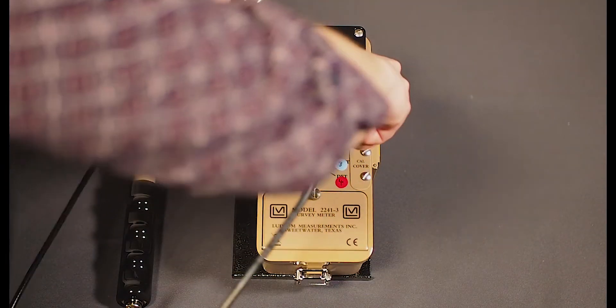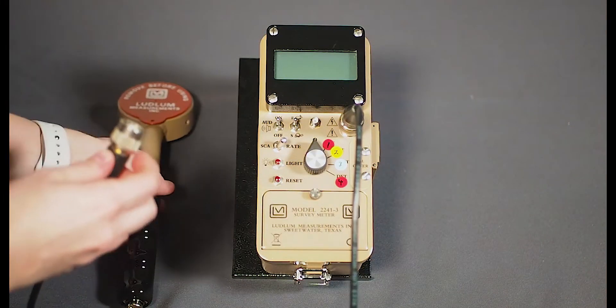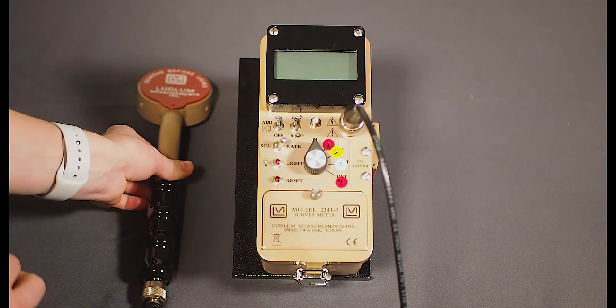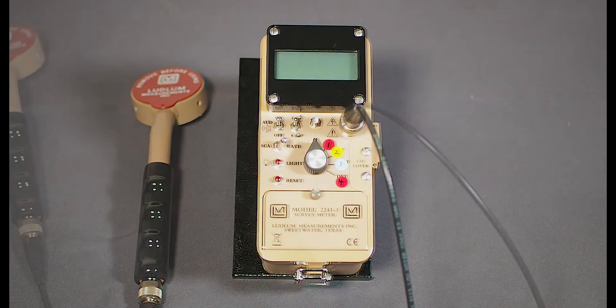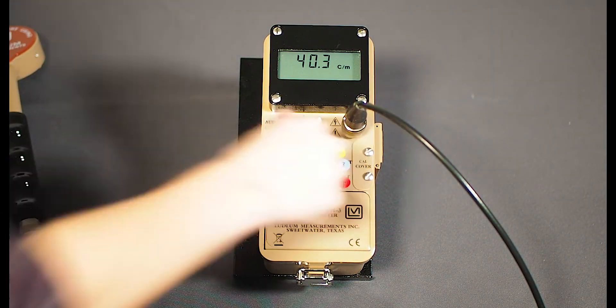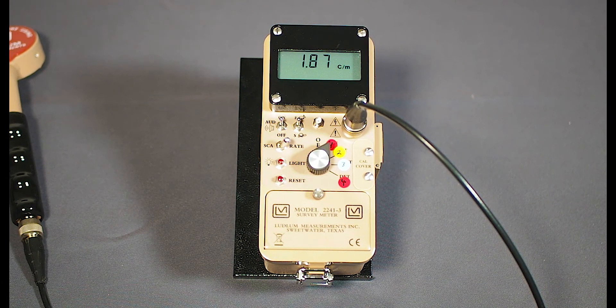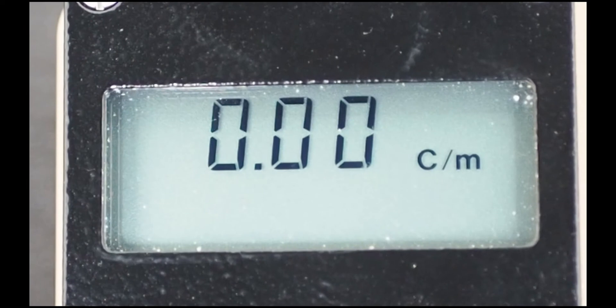Connect the C cable to the Model 2241-3 and connect the other end to the 44-9. Turn the rotary switch to the detector one position. The instrument will go through a quick boot up process. Ensure the low battery symbol is not displayed. If it is, replace the batteries.